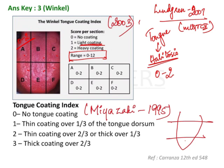Students must also remember the Miyazaki index, given by Miyazaki et al. in 1995. He divided the tongue into thirds. Score 0 is no tongue coating; score 1 is coating present in less than one-third of the dorsum; score 2 is less than two-thirds of the dorsum; and score 3 is the entire tongue surface is covered.